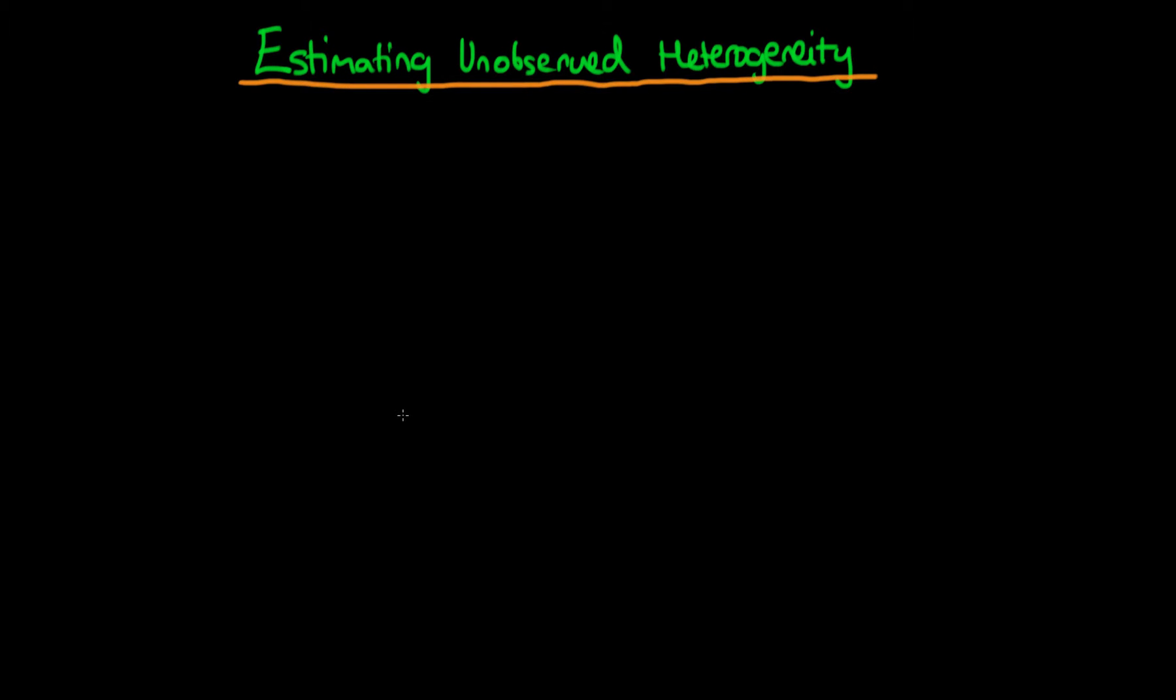In this video I want to talk about how you can go about estimating the unobserved heterogeneity. So let's say we have our original equation where we're interested in finding out the effect of crime and unemployment in a given city at time t on the level of house prices in that particular city at time t.